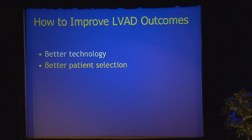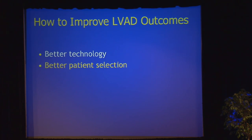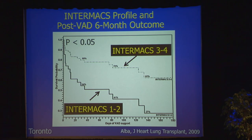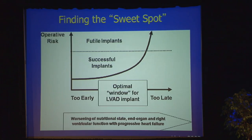How do we improve our VAD outcomes? We saw that better technology — the newer pump was better than the older pump in the destination HeartMate trial. Another way we can improve outcomes is with better patient selection. If you take patients when they're critically ill in the INTERMACS 1 or 2 category, the outcomes are not nearly as good as if you can get them just a little earlier in the disease cascade.